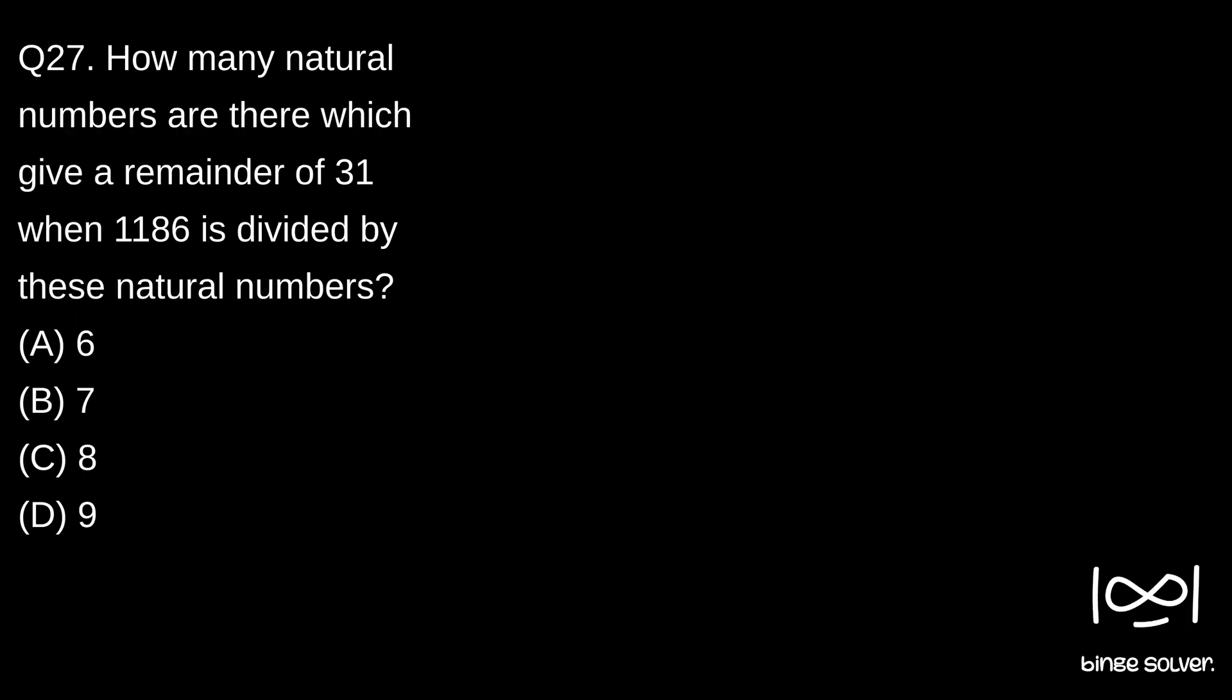Next question, question 27. How many natural numbers are there which gives a remainder of 31 when 1186 is divided by these natural numbers?